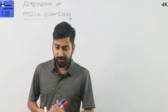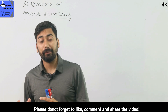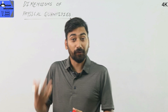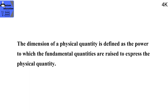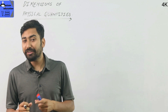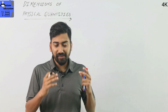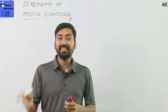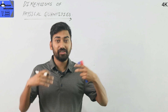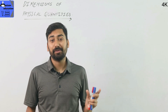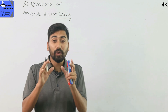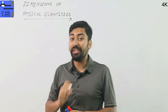So what are the dimensions of a physical quantity? The physical quantity is expressed as a power of the fundamental quantities. What is inside the square bracket is the dimensional formula. In simple words, every physical quantity can be raised to a certain power — M, L, and T — and written inside square brackets. The dimension of a physical quantity is also the same as its physical unit squared.